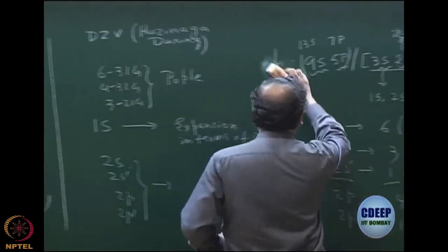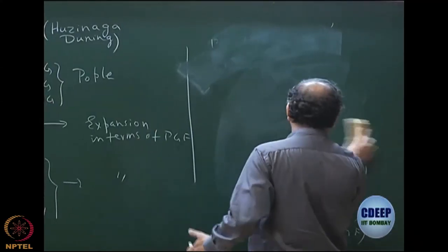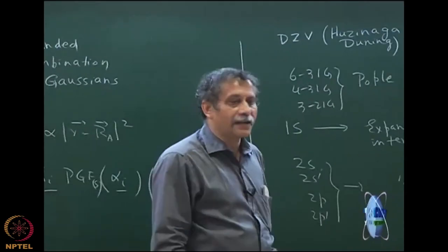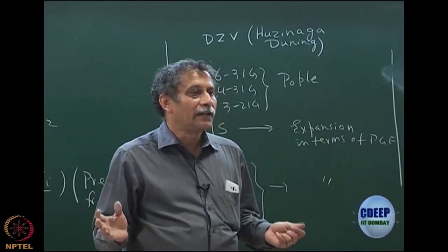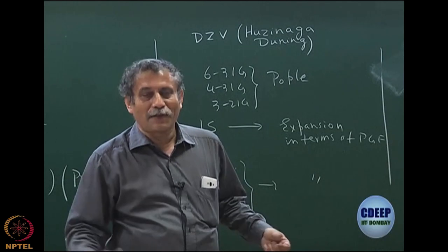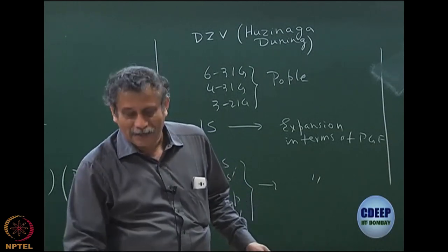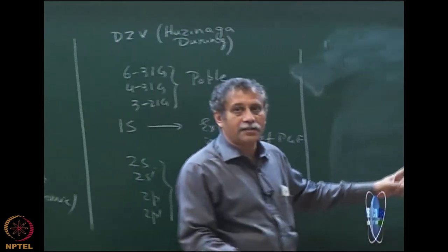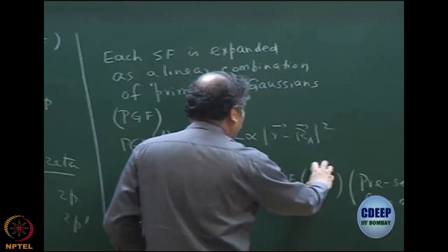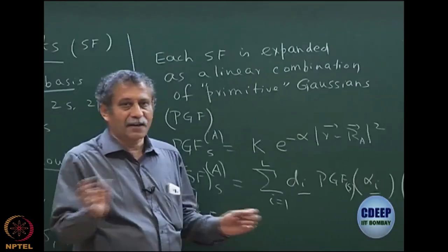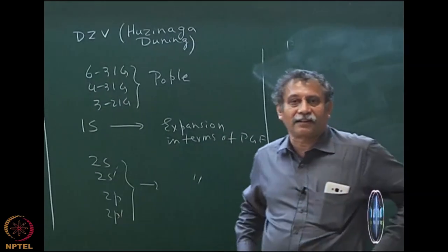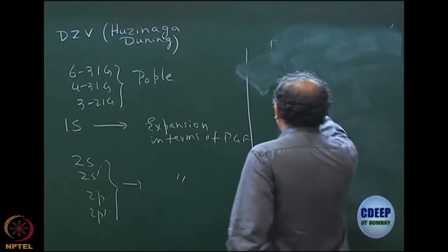Now I will explain Pople's basis set, since it is more commonly used today. Interestingly, the Huzinaga-Dunning basis set is almost outdated — most people use Pople's basis sets since Gaussian became the standard software. Pople of course uses his own basis sets in Gaussian. Also note: Huzinaga gave the primitive Gaussian exponents (the α_i), and Dunning gave the contraction coefficients.